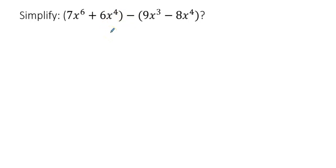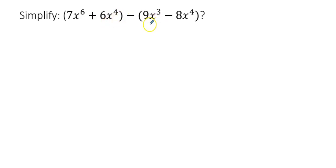Let us simplify. We have two binomials here. The first expression is 7x to the power of 6 plus 6x to the power of 4. And the second expression is 9x cubed minus 8x to the power of 4. We are subtracting this second expression from the first because of that minus sign.